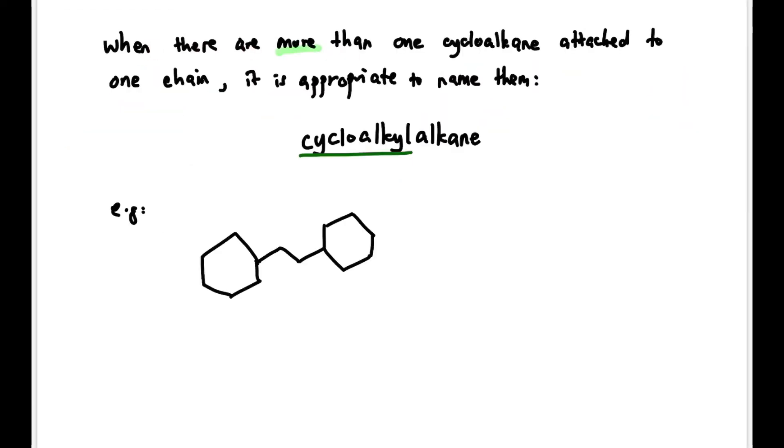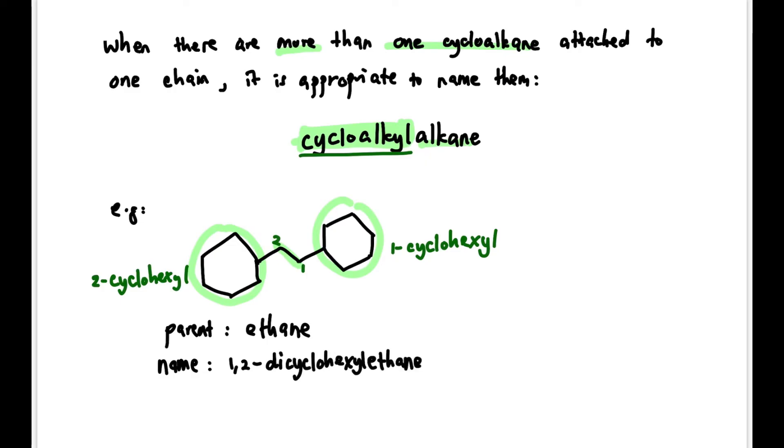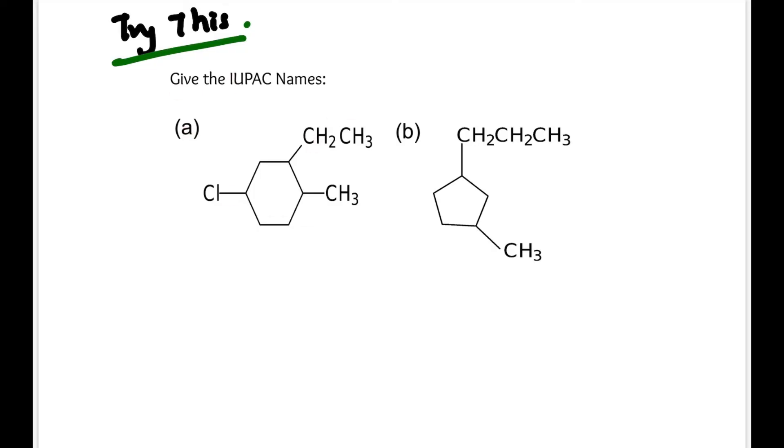Next, when there are more than one cycloalkane attached to one chain, it is appropriate to name them as cycloalkyl alkanes. The parent in this case is ethane, even though it only has two carbons. The substituents are both cyclohexane - there are two cyclohexanes. So the full name is 1,2-dicyclohexyl ethane.